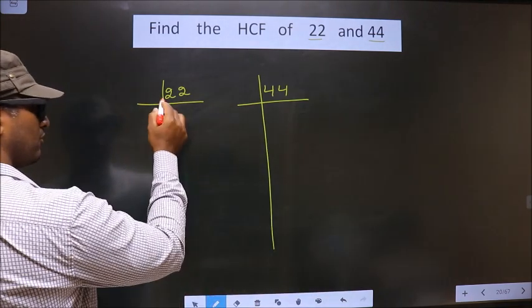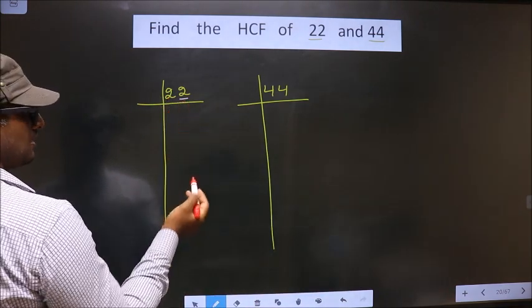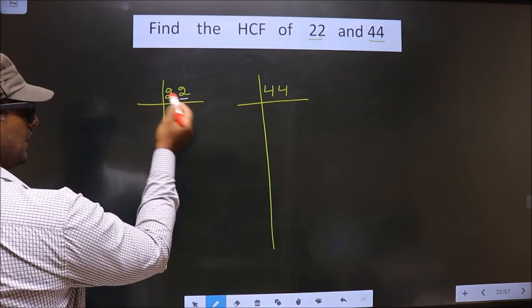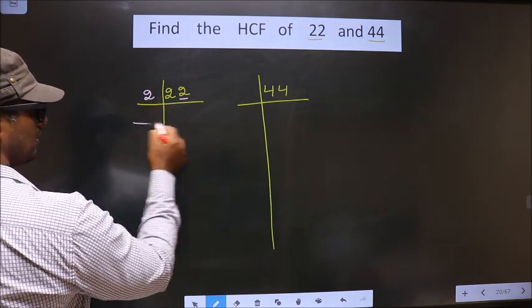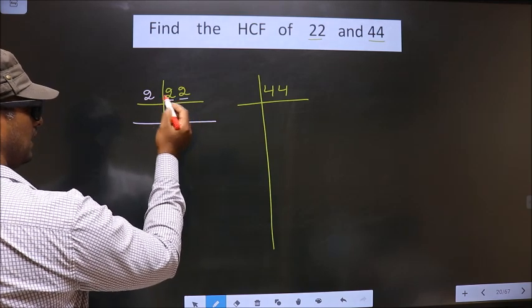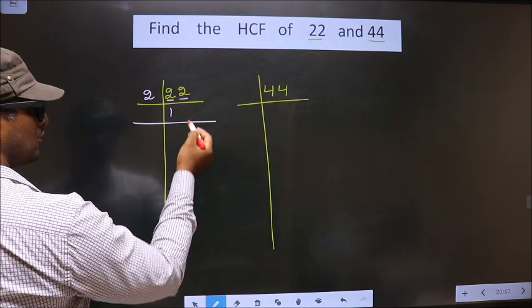Now, for this number, last digit is 2, which is even, so we take 2 here. Now, first number is 2. When do we get 2 in the 2 table? 2 times 1 is 2.